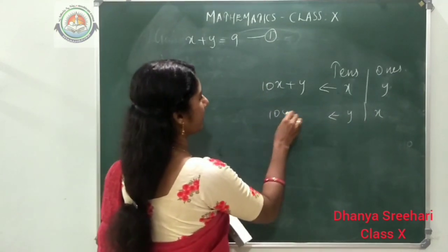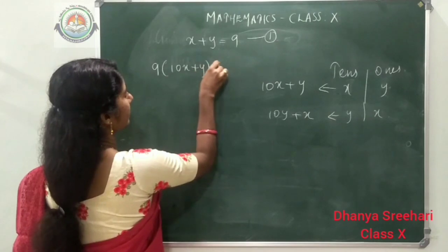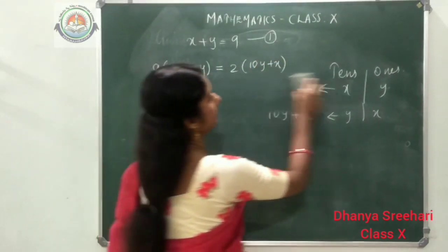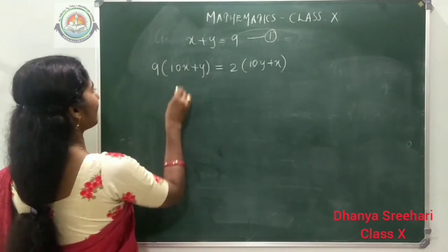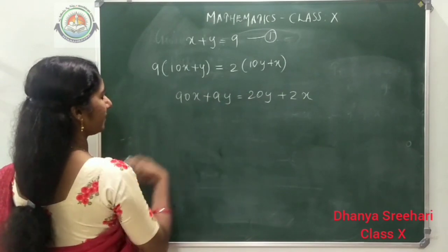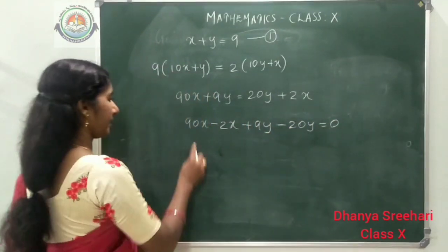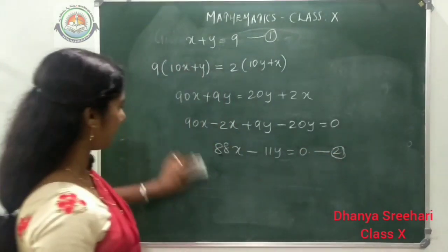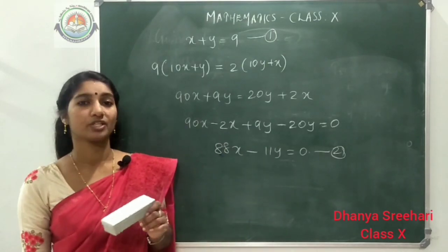So the statement becomes: 9 times (10x plus y) equals 2 times (10y plus x). Expanding: 90x plus 9y equals 20y plus 2x. Rearranging: 90x minus 2x plus 9y minus 20y equals 0, giving 88x minus 11y equals 0 as the second equation. We need to apply the elimination method, as the question requires it.